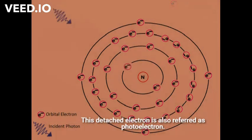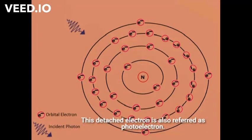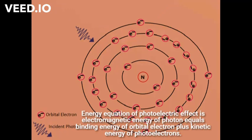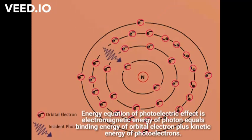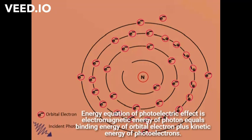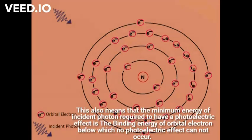This detached electron is also referred to as a photoelectron. The energy equation of the photoelectric effect is: electromagnetic energy of photon equals binding energy of orbital electron plus kinetic energy of photoelectron.